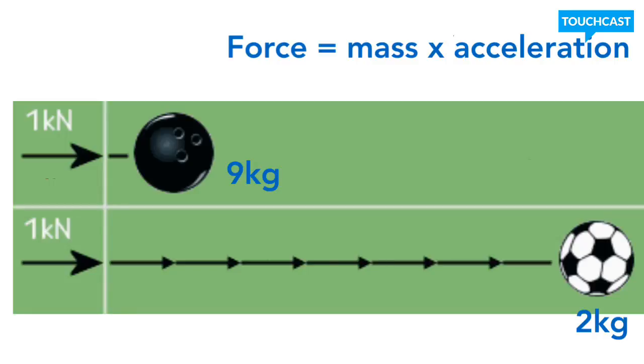The soccer ball has less mass, it accelerates faster than the bowling ball. Both objects would have the same amount of force. Basically, it's the mass that causes the bowling ball to have less acceleration.